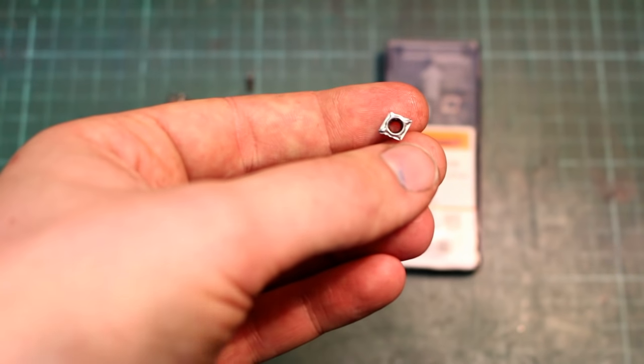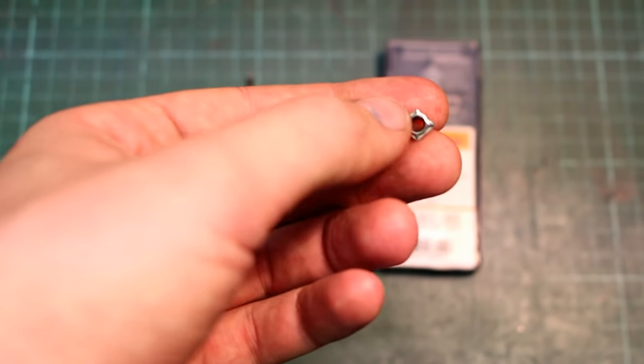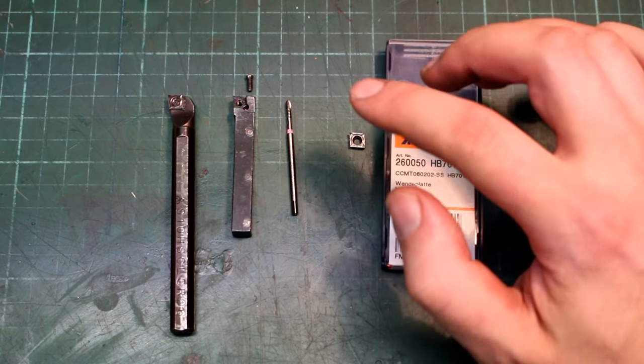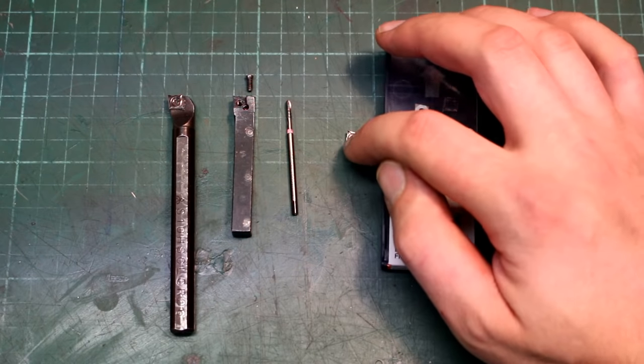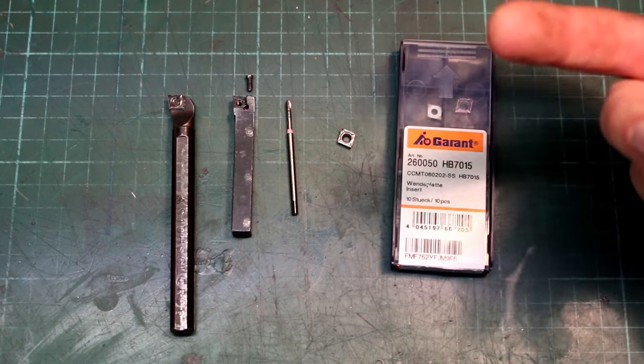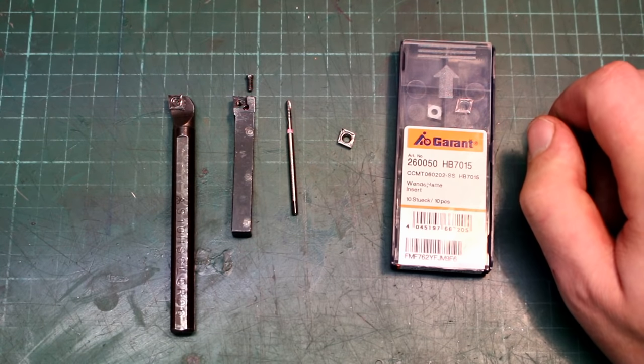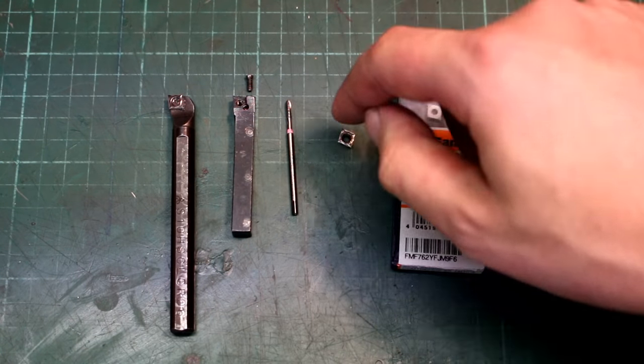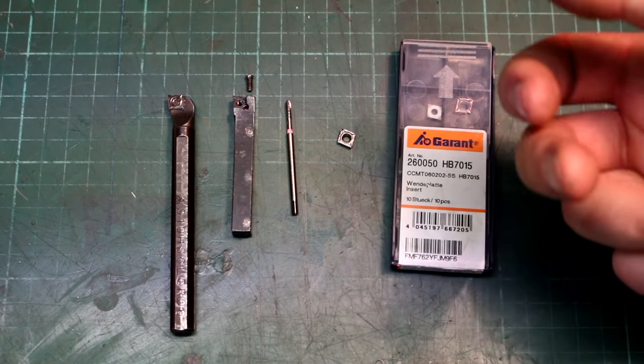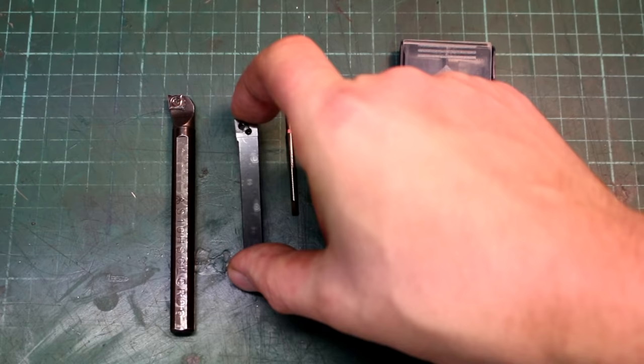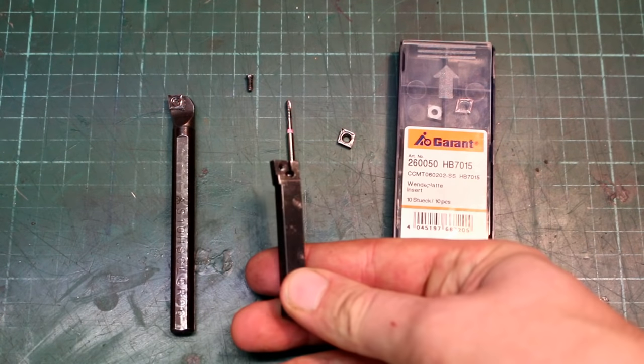As you can see they are uncoated and that's how I like my inserts. Because the coating produces a rounding of the cutting edge and that increases the cutting pressure. And on light machines like mine you don't want much cutting pressure because it's only causing problems. This is a standard facing and turning tool for these inserts.